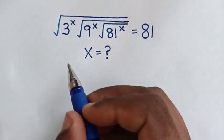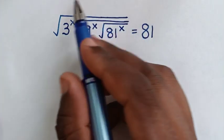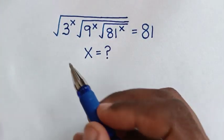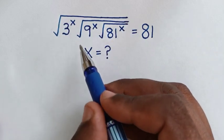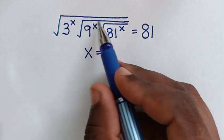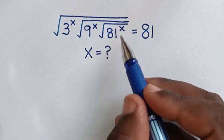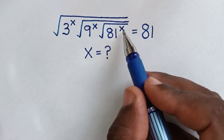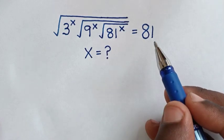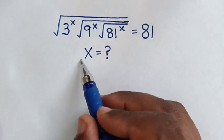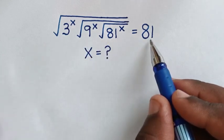Hello, you are welcome to solve this math problem, which is the square root of 3 to the power of x, under the square root of 9 to the power of x, under the square root of 81 to the power of x, is equal to 81. We need to find the value of x from this equation.